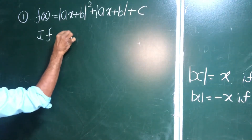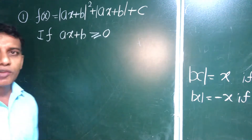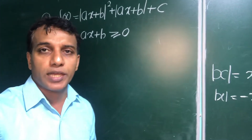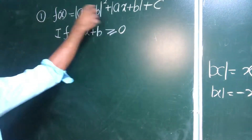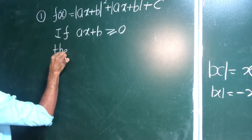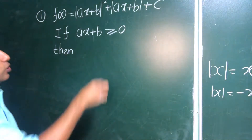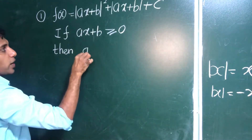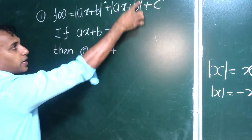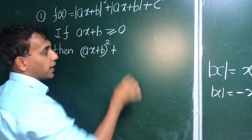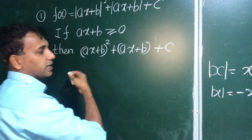Case one: if ax plus b is greater than or equal to zero, we have a solution in quadratic form. Since ax plus b is completely positive, we write it as is with no changes — (ax + b) squared — and then plus c.